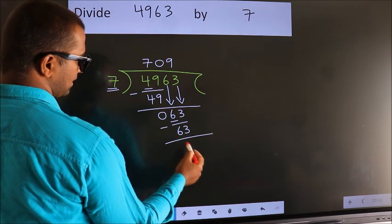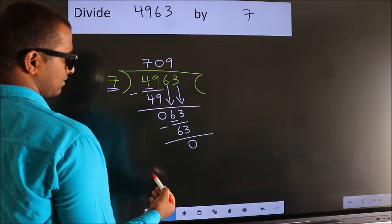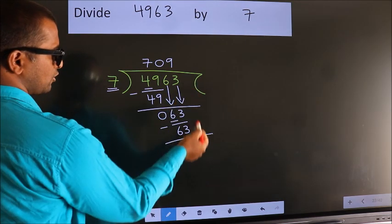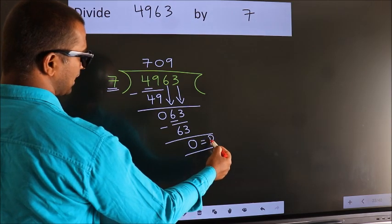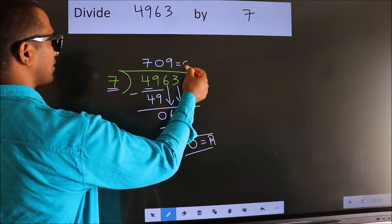Now we subtract. We get 0. No more numbers to bring it down. So we stop here. This is our remainder. This is our quotient.